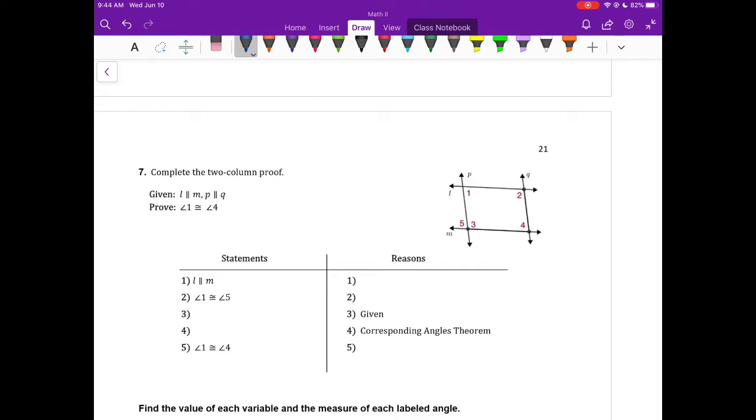On number seven, statement one says L is parallel to M. We have this up top under given, so I'm just going to write given right here. We also have on step two, it says angle one is congruent to angle five. Let's just circle these up here. One would be congruent to five because of the alternate interior theorem. They're alternating sides, they're on the inside of the two parallel lines.